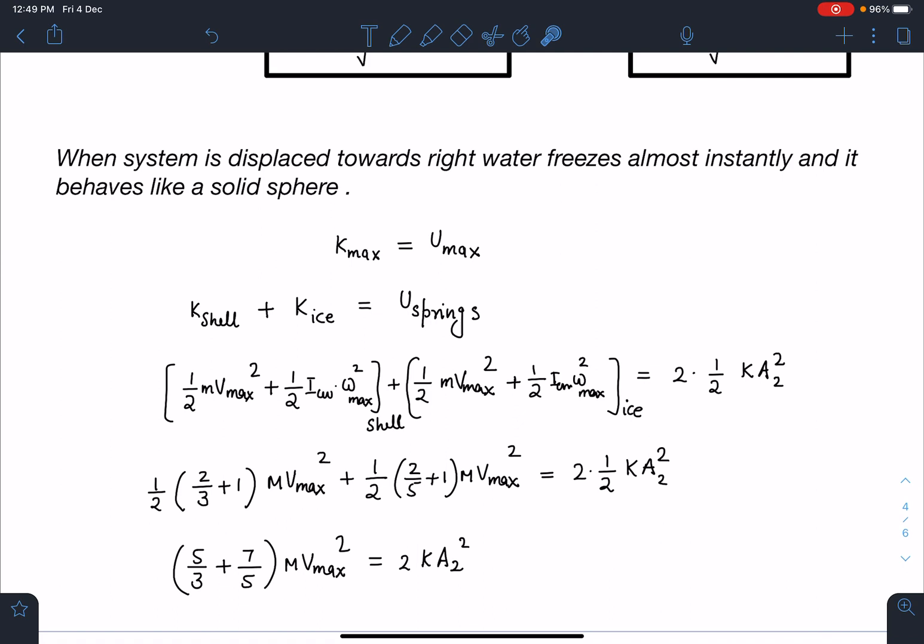This time the shell and the ice which has become a solid sphere both will be in pure rolling. Now I can write 1/2 Mv_max² plus 1/2 I_cm*omega² for shell and 1/2 Mv_max² plus 1/2 I_cm*omega_max² for ice, and that should equal 2 times 1/2 KA₂².